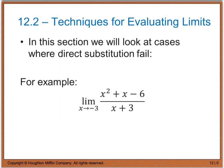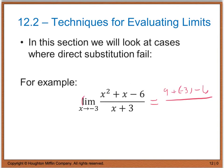Now, in 12-2, direct substitution is not going to be a successful route, and this is why. If you look at this example below, we have the limit as x approaches negative 3 of the function x squared plus x minus 6, divided by x plus 3. Well, if I go ahead and plug in negative 3, I end up with negative 3 squared, which is 9, plus negative 3 minus 6, divided by negative 3 plus 3.